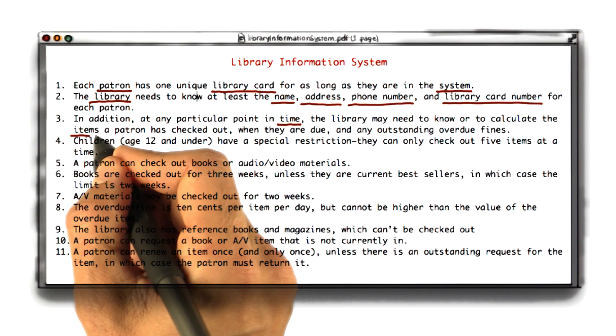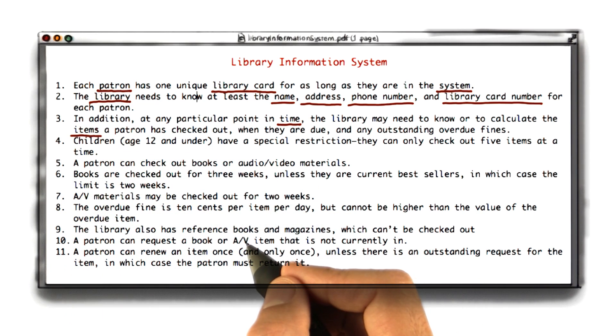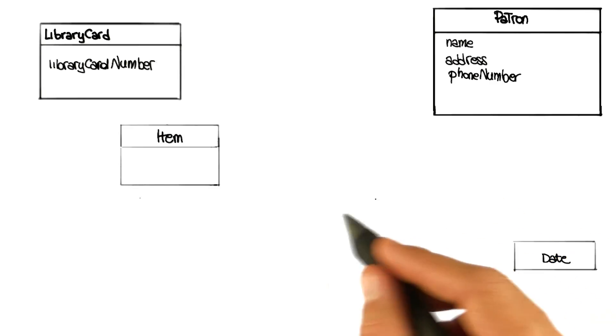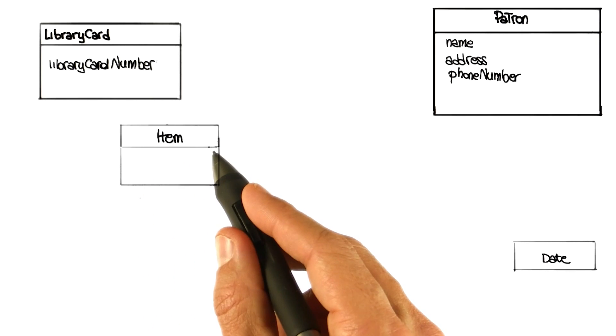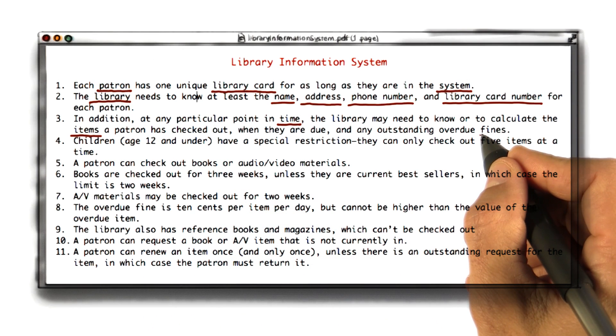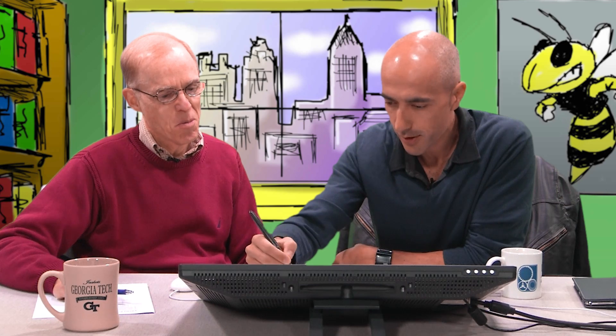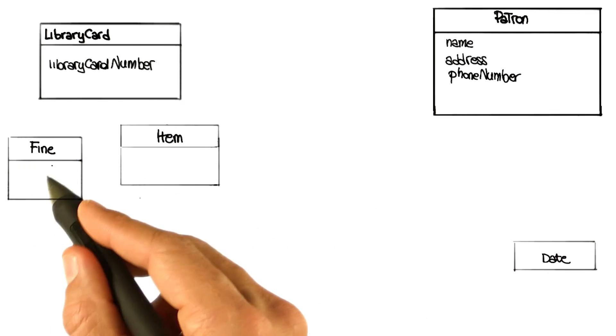Items also seem to be pretty relevant elements for what I know about libraries — this is what we check out, this is what we're here for — so items will definitely become a class. And there's also this concept of fines, which seems to be important: you give fines to people who are late, you collect fines and so on. So we'll create a fine class down here as well.